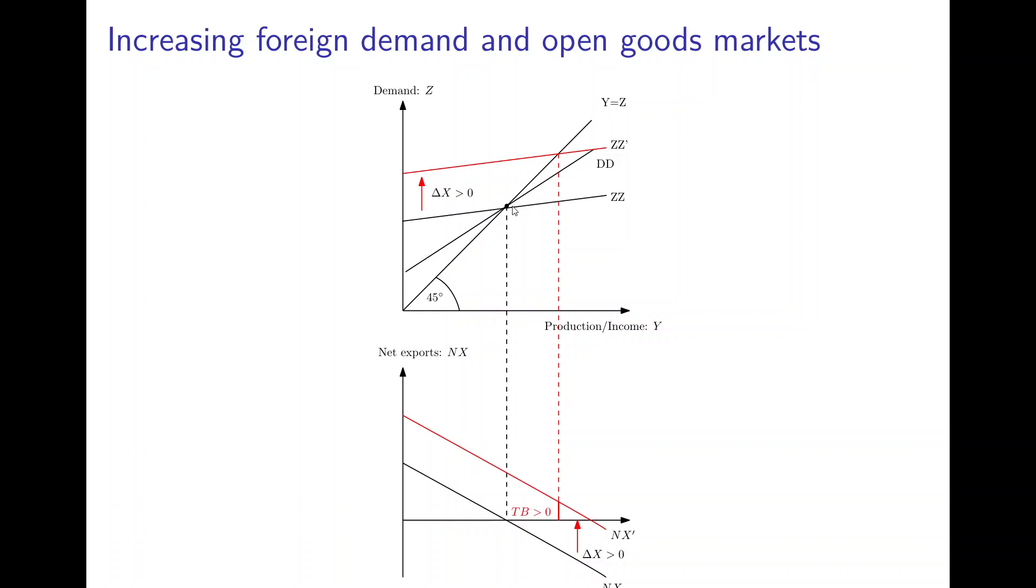Now we see that there is a new equilibrium in the goods market at a higher income level because the home country exports additional goods, incomes rise, and so on. And this is now associated with a positive trade balance, so with a trade surplus. The reason is that foreign demand increased, domestic demand initially didn't change, so the additional demand boost comes from the foreign economy.